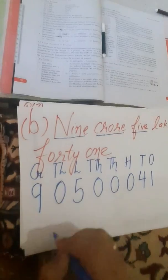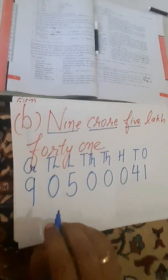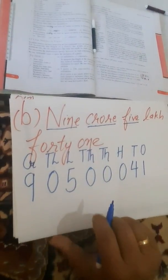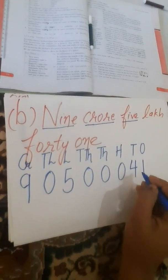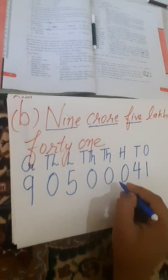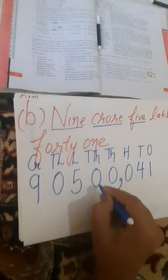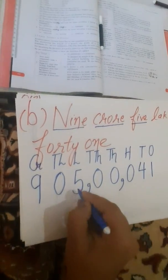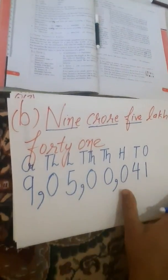Now I have to place commas. I will place commas according to the Indian system of numeration. In the Indian system, place comma after every 3 digits from the right, then skip 2 digits and again place comma, skip 2 digits and again place comma.